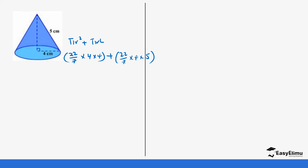So 22 × 4 × 4 gives us 352, divided by 7 gives us 50.29. Then 22 × 4 × 5 gives us 440, divided by 7 gives us 62.86. Adding the two areas: 50.29 + 62.86 = 113.15 centimeters squared.